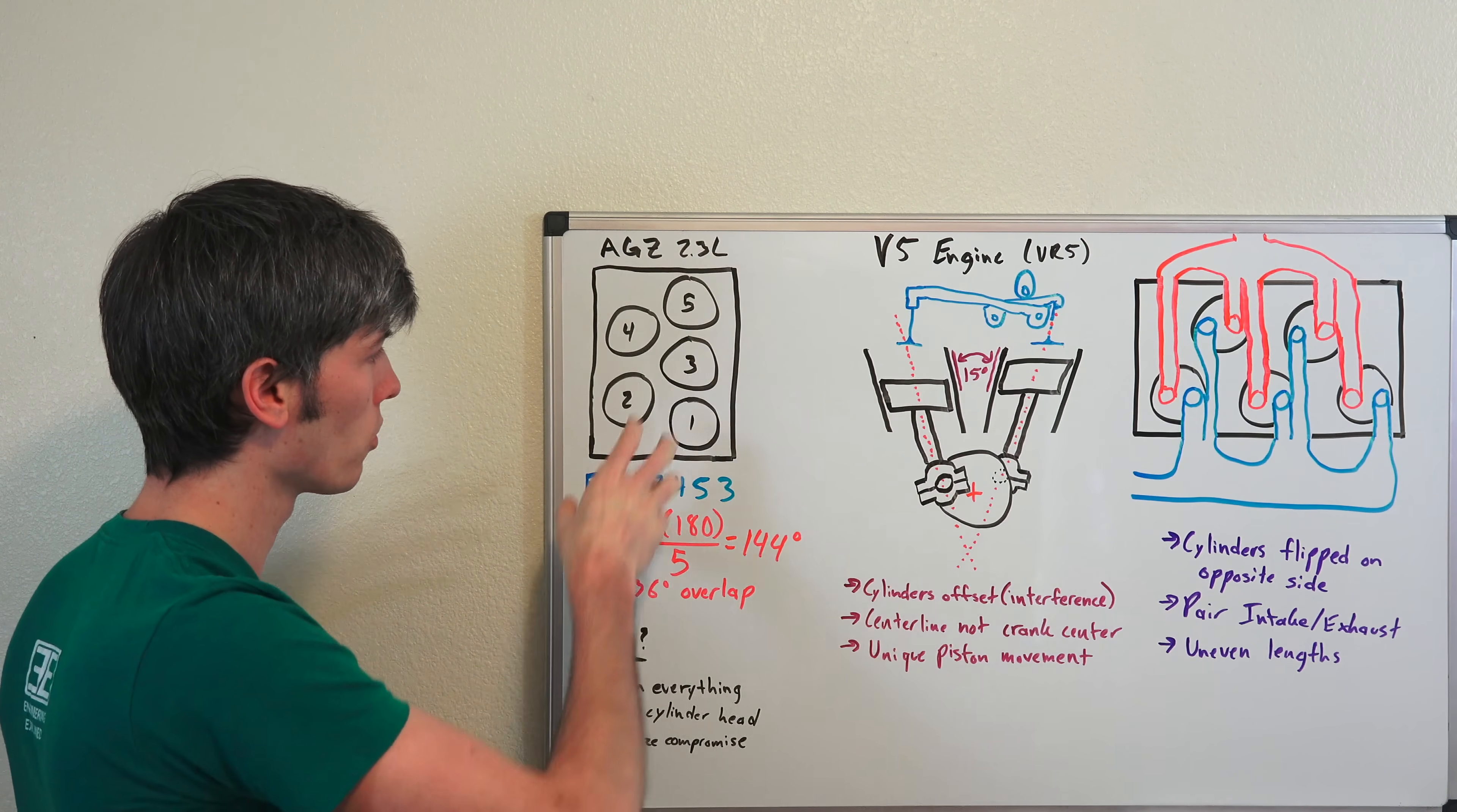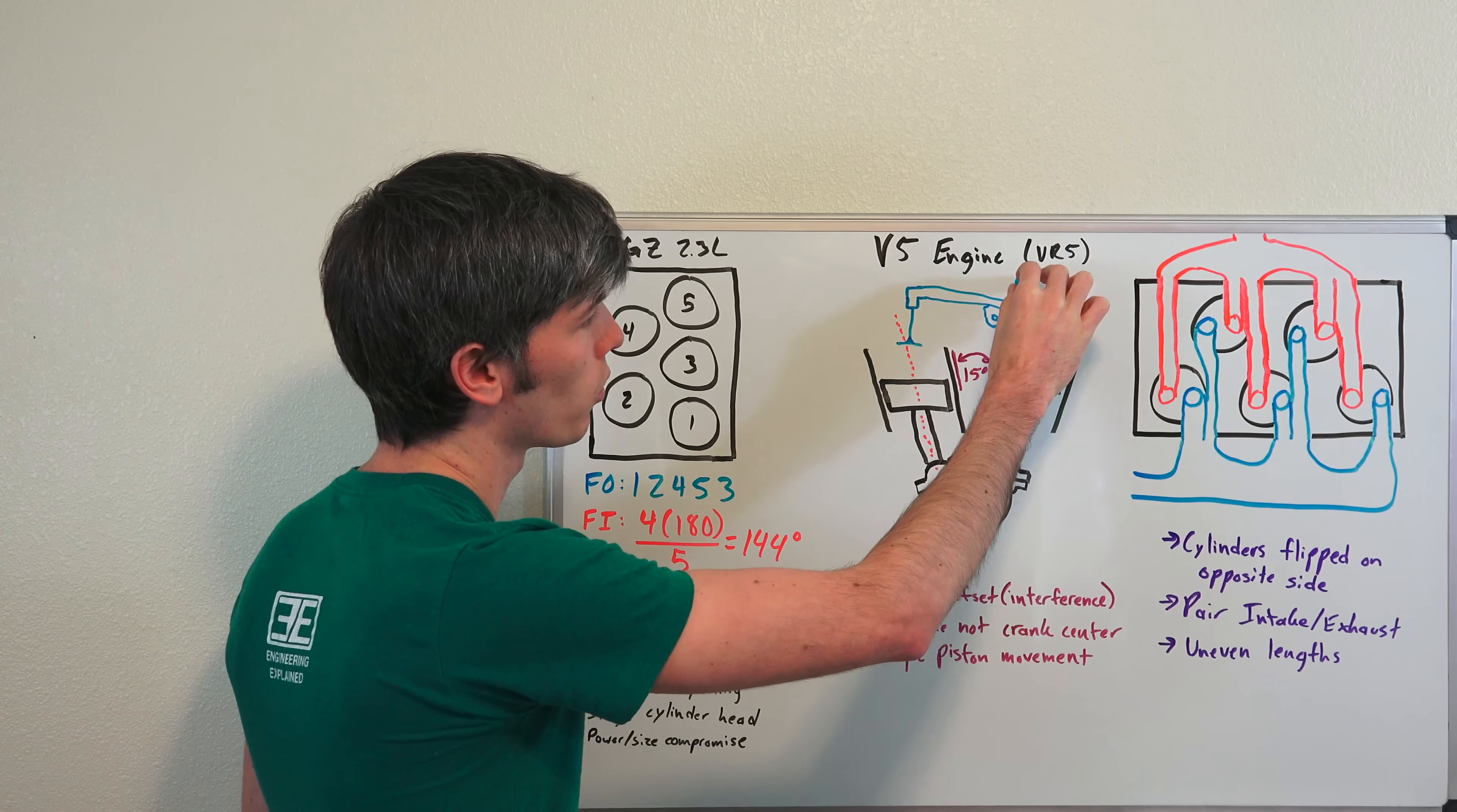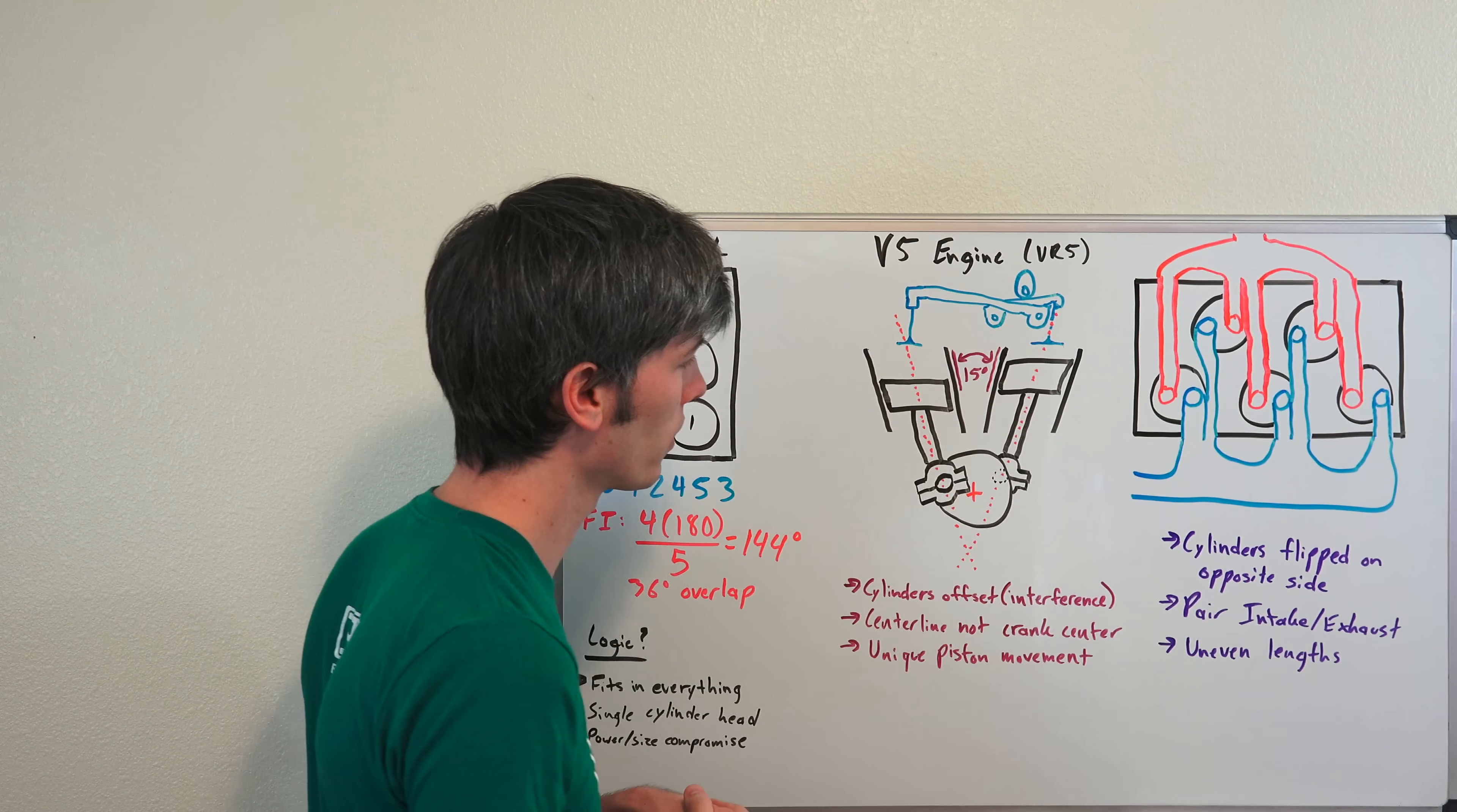It does have a single valve train up on top, which is a cool thing about the engine that Volkswagen has done with these VR engines. This is a poor sketch of what that looks like, but you've got a camshaft on one side for the intakes, a camshaft on the other side for the exhaust and it will stretch over and activate that intake on one side, activate the intake on this side, depending on where those pistons are.